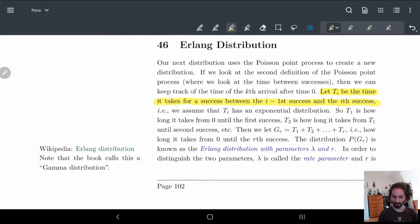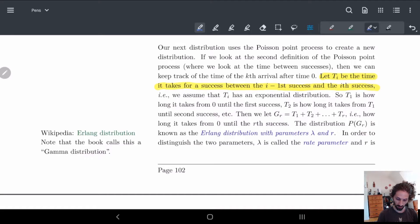Now the thing we're going to ask is, well, how long does it take to get to the rth success? So basically we're going to want to add all the things up, right? We want to know from now how long it takes to get to the rth success. And so that is basically going to give us what's called Erlang's distribution. So we just sum these up, and that gives us exactly that. So the distribution P of Gr is the Erlang distribution with parameter lambda and r.